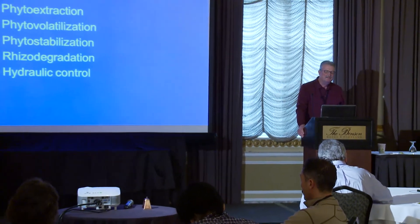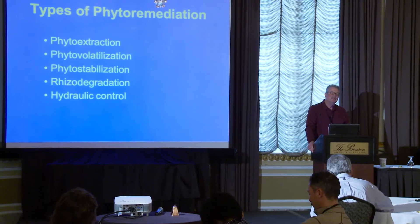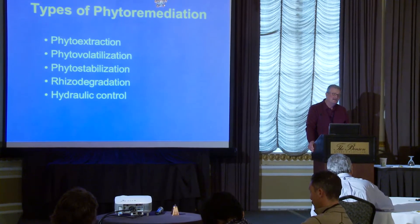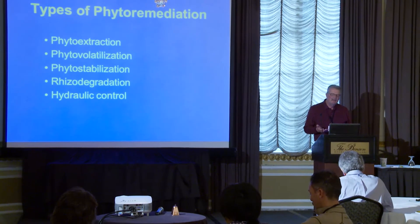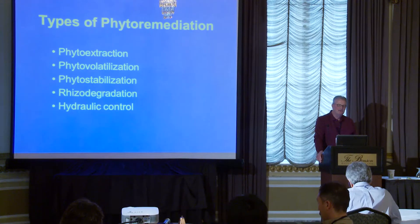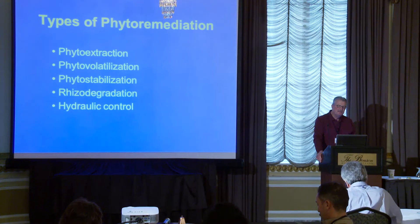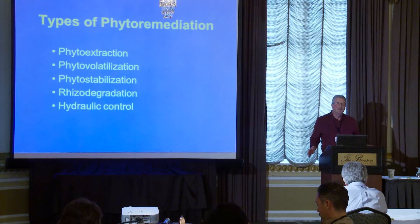Here are the terms you run into in phytotechnology and phytoremediation. Plants can take up contaminants from the soil and extract them — that's one process. They can also volatilize them, taking up the compound and volatilizing it into the air into infinite dilution. They can also stabilize the contaminant in the soil so it doesn't move around or blow around.